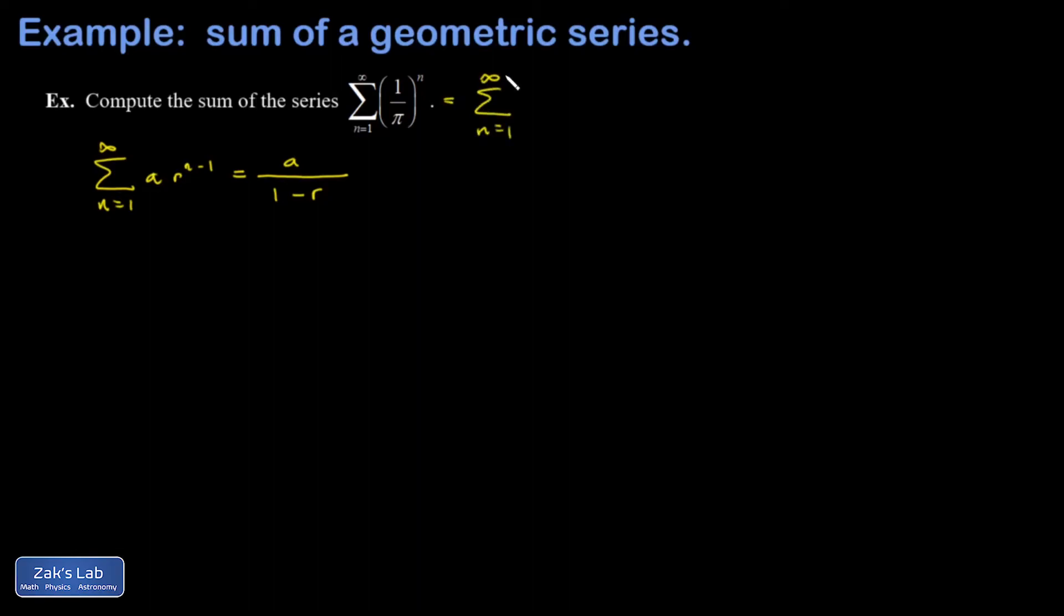I have to get a 1 over pi to the n minus 1 so I'm going to pull out one factor of 1 over pi and then write it as 1 over pi times 1 over pi to the n minus 1.